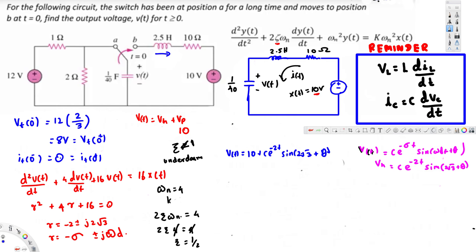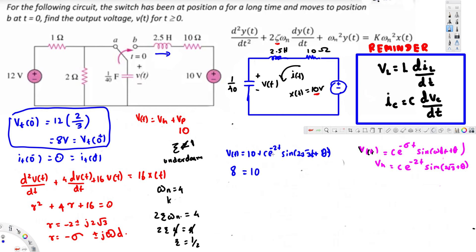We still need to find the values of C and theta using the initial conditions. Applying V(0) = 8: at t = 0, e^0 = 1 and sin(0 + theta) = sin(theta), so we get 10 + C·sin(theta) = 8, which gives us C·sin(theta) = -2. This is our first equation.